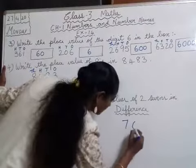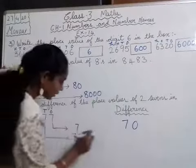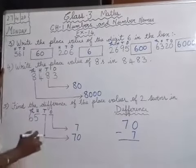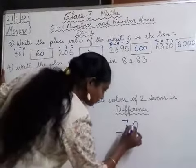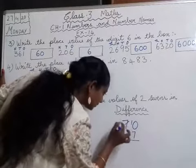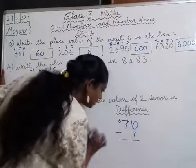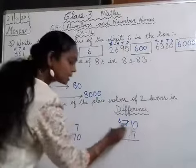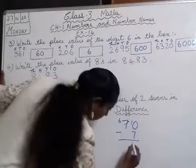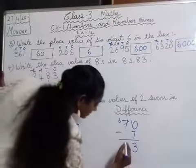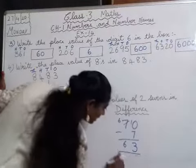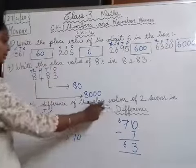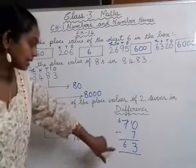Now we subtract: 70 minus 7. Write 70 first because it is the bigger number, then minus 7. Borrow from 7, so it becomes 6, and 0 becomes 10. 10 minus 7 is 3, and the 6 stays. So 70 minus 7 equals 63. The difference of the place values of the two 7s is 63.